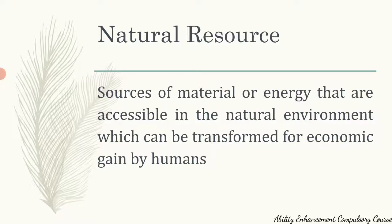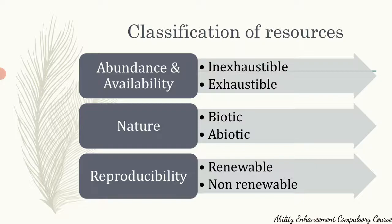Natural resources can be classified based on several parameters. One parameter is based on their abundance and availability. Resources which cannot be reduced in their quantity — their quality may decrease over time if not used properly, but their abundance cannot be reduced — are referred to as inexhaustible resources. Examples include the sun, wind, and tides. We can use them for our benefit, but they cannot be exhausted; they will never run out.